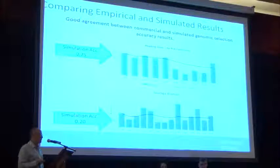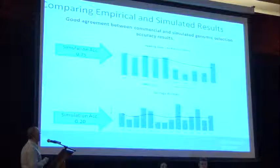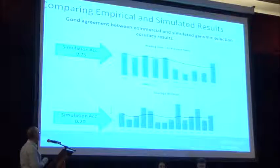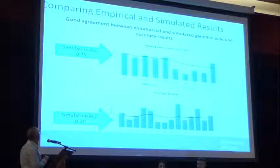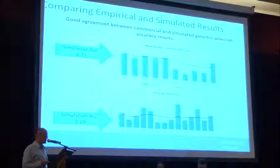When comparing simulated accuracies to what we achieved in the commercial breeding program, they line up quite nicely. Simulated accuracy for biomass yield was about 0.2, and we achieved at least 0.2 in the commercial program. For heading date, we achieved 0.75 in simulation, and roughly that in our empirical results. This gives me more confidence that the genetic gain predicted by simulation reflects what is achievable.